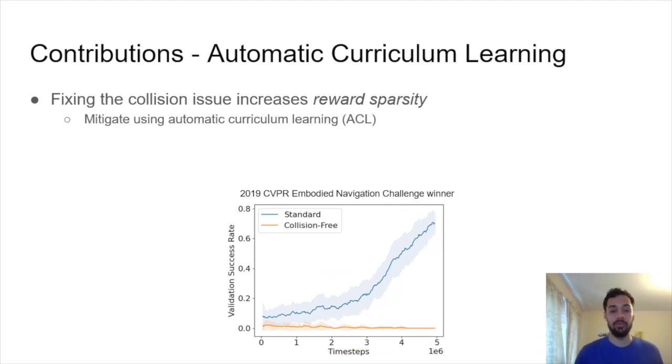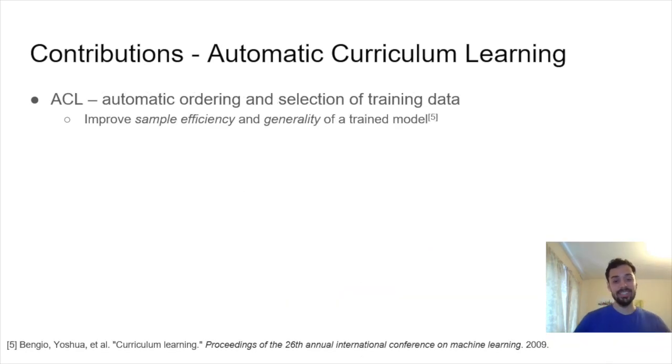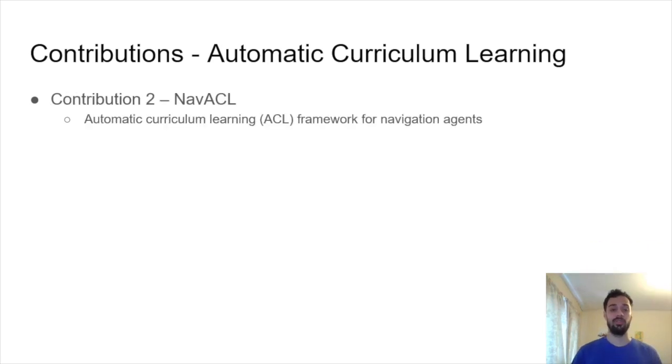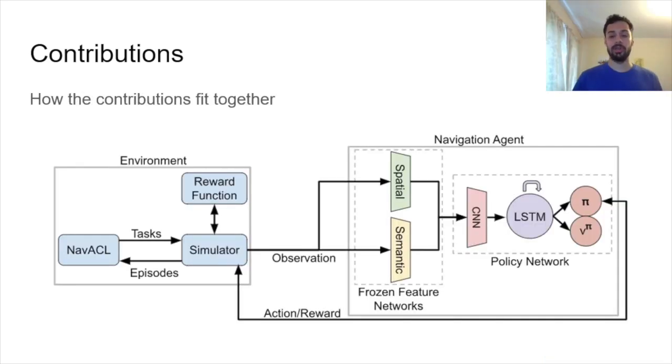We mitigate this issue of reward sparsity using something called automatic curriculum learning or ACL. ACL is the automatic ordering and selection of training data. The idea here is to improve the sample efficiency as well as the generality of a trained model. It brings us to our second contribution, NAVACL, which is an ACL framework specifically for navigation agents. This chart shows how all of our contributions fit together and we're going to be jumping back to this chart every time I move between sections.